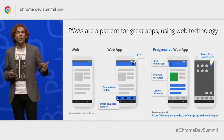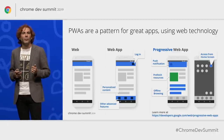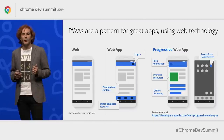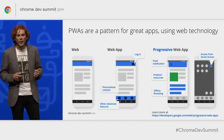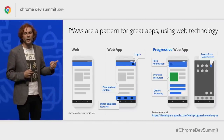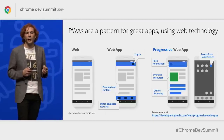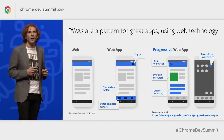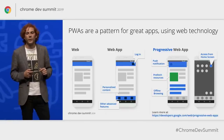Progressive web apps are a pattern for great apps that use web technology, and they have all the features and functionality users expect from a modern app on mobile or desktop. PWAs include things like personalized content, offline mode, push notifications, and instant loading. PWAs and installable web apps go hand in hand — you need to have a PWA in order to offer install.